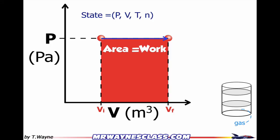So on a PV diagram, the area is equal to the work — and not just the work, but it's the work of the gas. If I go back and think about it, the piston moved upwards and the displacement was upwards. The force was upwards by the gas, so everything was going in the same direction. That's positive work. So whenever you have a process going from left to right, you've got positive work being done by the gas.